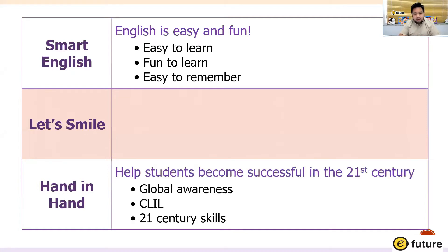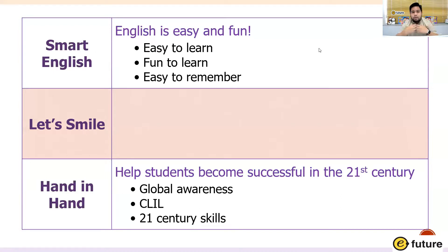With Hand in Hand, as teaching practices and theories evolved over the years — especially with the buzzwords of 21st century skills and getting students ready to be the next generation of learners — I tried to incorporate that into Hand in Hand. It includes more global awareness, getting students to think outside of their culture and realize what's out there on a global scale, as well as CLIL — content learning — which takes other subjects from school and adapts them into the English classroom, plus the 21st century skills.